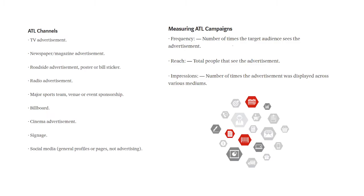Here are the ATL channels: radio advertisement, TV advertisement, cinema advertisement, signage, and social media. For measuring ATL campaigns we have frequency — the number of times the target audience sees the advertisement; reach — total people that see the advertisement; and impression — the number of times the advertisement was displayed across various mediums.